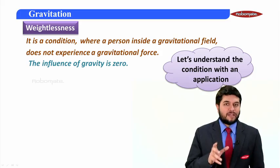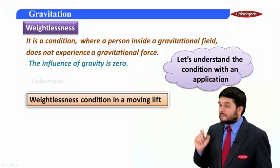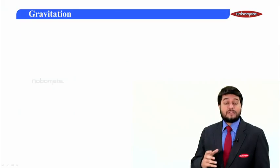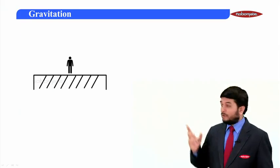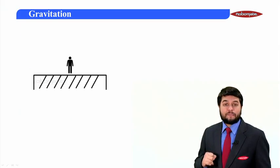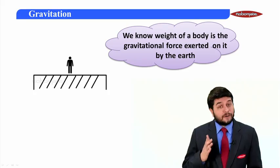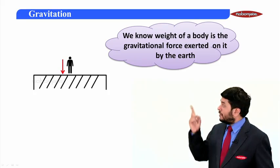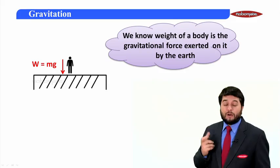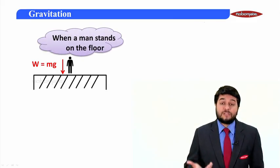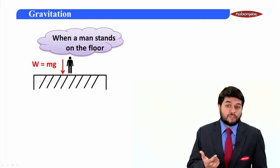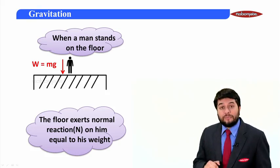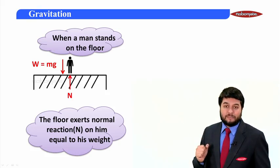Let us understand this with an application. Consider weightlessness condition in a moving lift. First, let us understand the basics — the forces acting on a person standing on a platform. If he is stationary and standing, the first force is the weight, which is the gravitational force exerted by the Earth, acting downwards, given as mg. Since he is in equilibrium and standing on the floor, there must be an equal and opposite force balancing this weight — that is the normal reaction acting on him, equal to the weight but acting in the upward direction, as shown in the diagram.